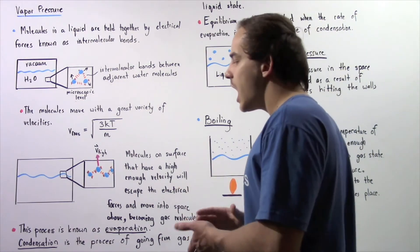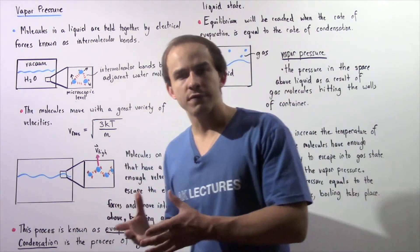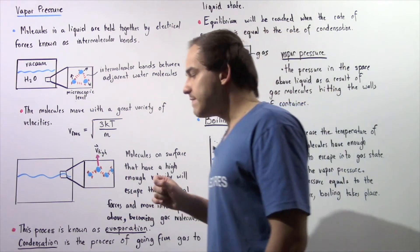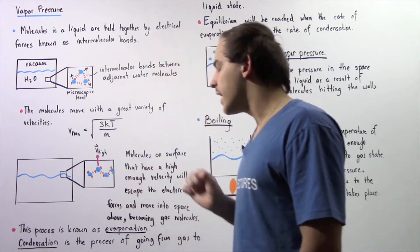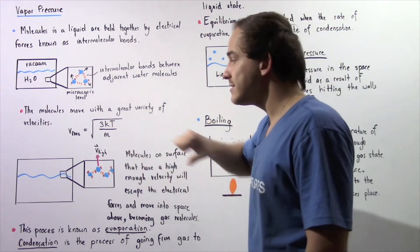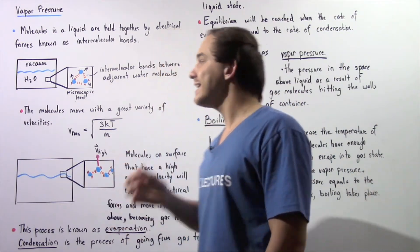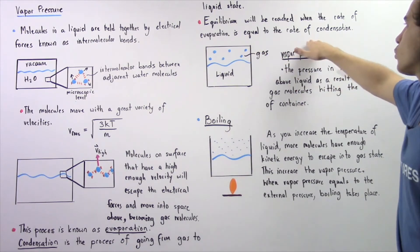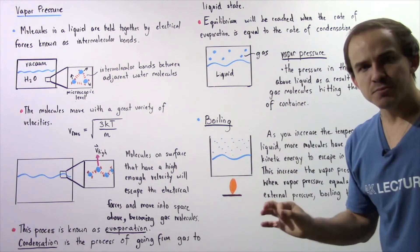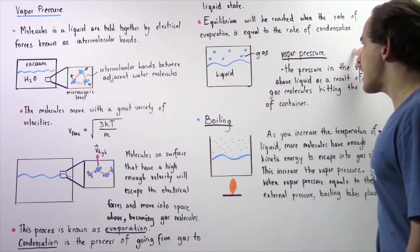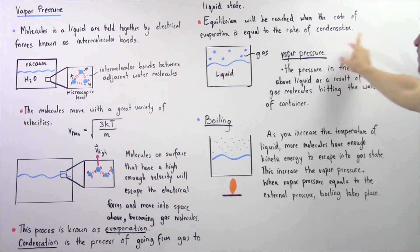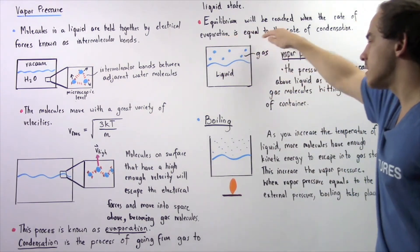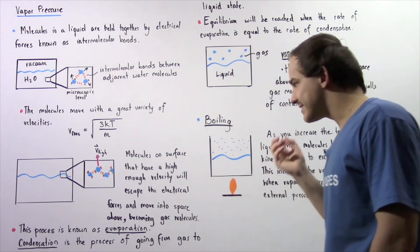Condensation is the opposite of evaporation — it is going from the gas state back into the liquid state. When the rate of evaporation is equal to the rate of condensation, our two systems, the liquid and the gas, are at equilibrium. At this point, we can measure the vapor pressure, which is the pressure in the space above the liquid as a result of the gas molecules hitting the walls of the container.